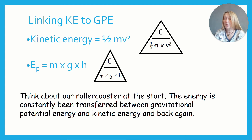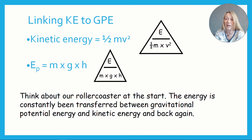In GCSE questions they often ask you to link the two equations together. Thinking back to the roller coaster — if we're given the gravitational potential energy at height, we can work out the kinetic energy during the transfer. GCSE questions assume 100% energy transfer, meaning none of the energy has been dissipated as heat. So at the top of the roller coaster, the gravitational potential energy equals the kinetic energy it had at the bottom.